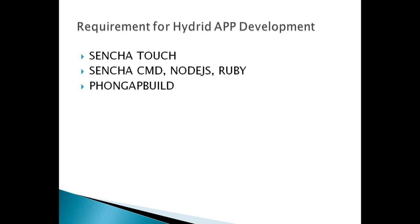For hybrid app development we will require these things which you can see on my screen. Sencha Touch is a JavaScript framework written in ExtJS and we will write all our code in this framework. Sencha Command, Node.js, and Ruby will be required to generate a build from the code we write in Sencha Touch.